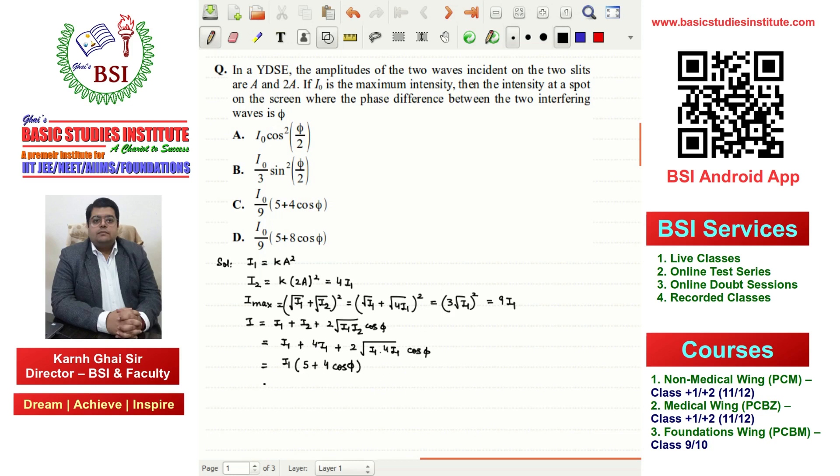Now finding I1 value. Since maximum intensity is 9I1, we can write I1 as I0/9. Substituting this gives us: I = (I0/9)(5 + 4cos(φ)). So this is the expression for intensity at any point on the screen where the phase difference is φ.